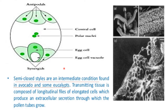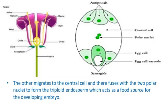Secretary cells of the stigma, style, and ovary provide an extracellular medium for pollen tube attraction and growth. A semi-closed style is an intermediate condition found in avocado and some eucalyptus. Transmitting tissue is composed of longitudinal files of elongated cells which produce an extracellular secretion through which the pollen tube grows. Double fertilization is unique to angiosperms and refers to the fact that both sperm nuclei fertilize nuclei within the embryo sac. After germinating on the stigma, the pollen tube grows between the transmitting tissue cells of the style and, on reaching the ovary, continues through the micropyle and nucellus.